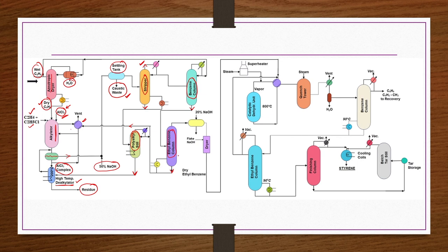The top stream from the ethylbenzene column is essentially pure ethylbenzene. It is stabilized by neutralization with 20% NaOH and then passed through a flaked caustic bed for drying, yielding dry ethylbenzene as the product of the first step.